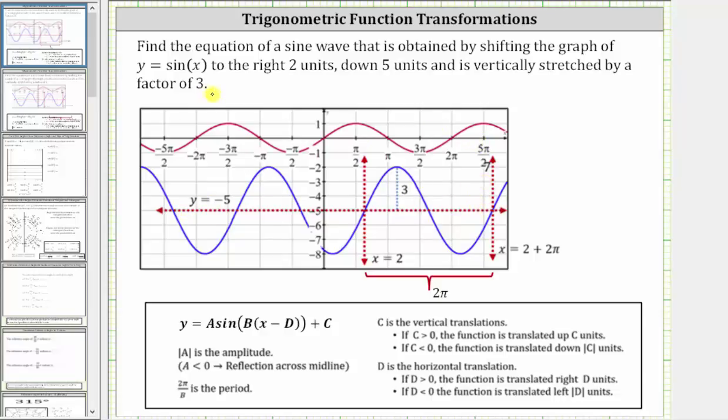Because the graph is also shifted right two units, instead of starting the graph of the sine function at the origin like we normally do, we start at x equals two. And because the period is not changed, we have one complete graph of the sine function from x equals two to x equals two plus two pi.